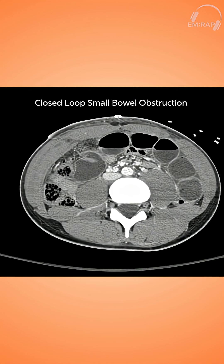I want to show you a CT scan I recently obtained of a patient who ended up having a closed-loop bowel obstruction. Now, if we're expecting an SBO, what are we going to see on a CT scan? Air fluid levels, right? That's what we know to expect to see, and we're going to see that here. Here's a quick scroll through of this patient's CT scan, but there are some other findings I want to point out as well.